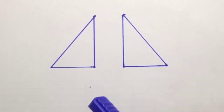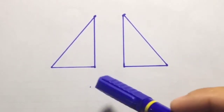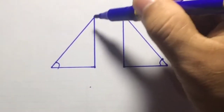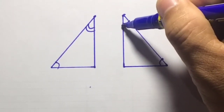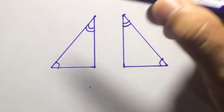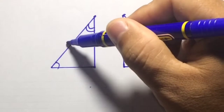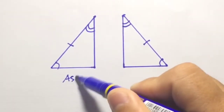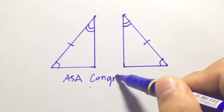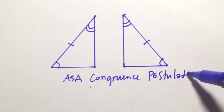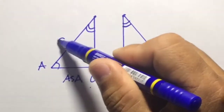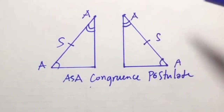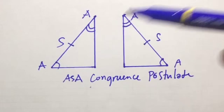So if we have these two triangles here, we just need to prove two angles. For example, this angle here and this angle here should be congruent, and this angle here and this angle here should also be congruent. And the side between these two angles — the included side — should also be congruent. So these two triangles are congruent using the ASA congruence postulate.